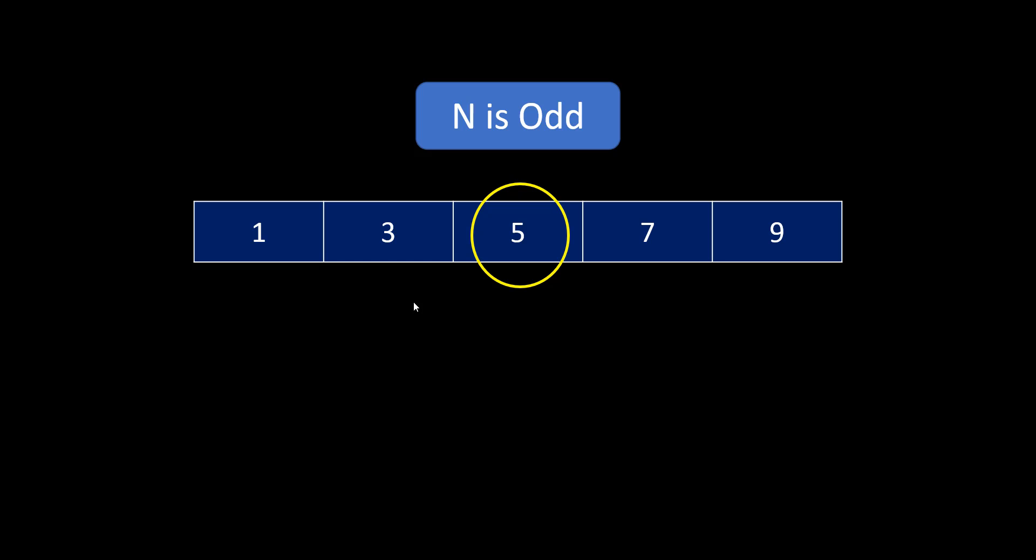So, over here, you will take this middle value as you need not have to change this and you will change all the remaining values to make it equivalent to this particular value.